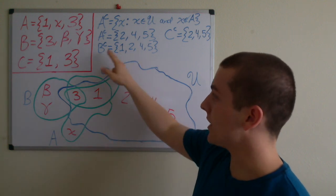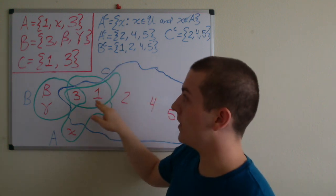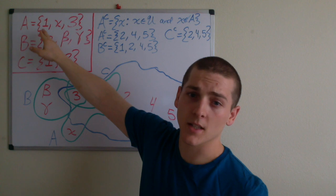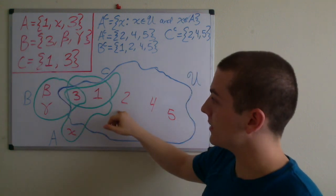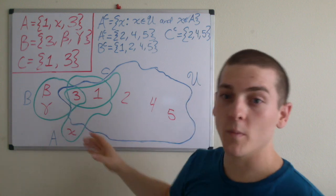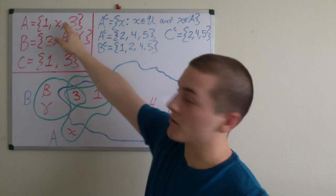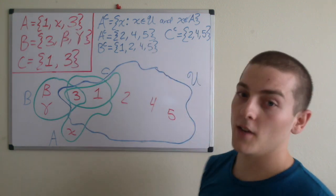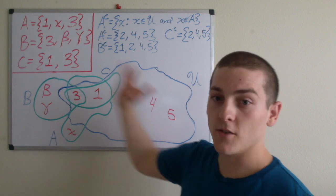So in this case if we look at the integer one we know that that's not going to be there because that's in A. If we look at the integer two that'll be in our set. We look at the integer three that won't be in our set because that's also in A, and then four and five are within the universe and they're not within A.